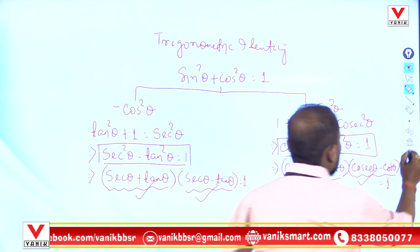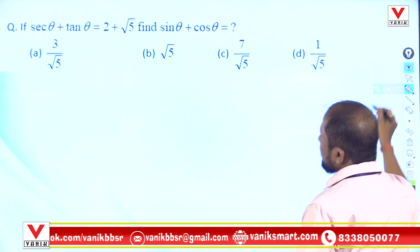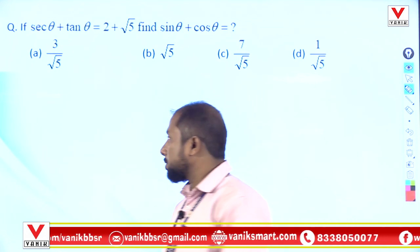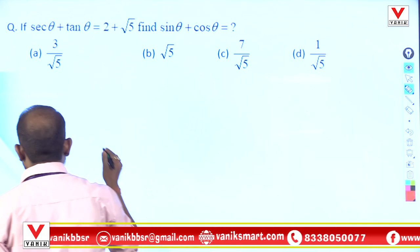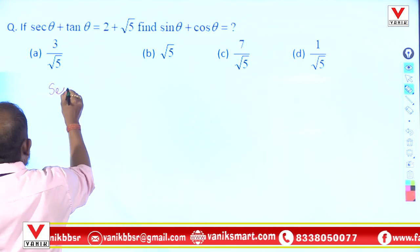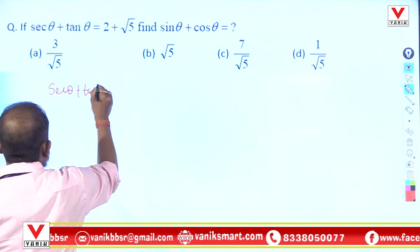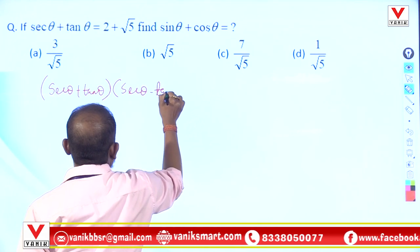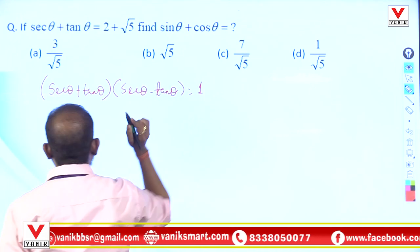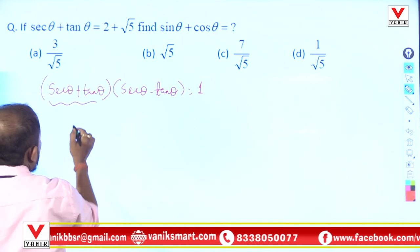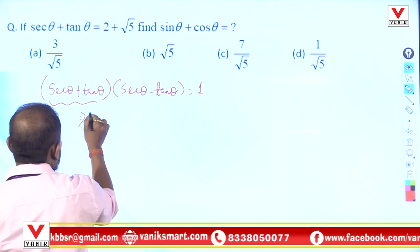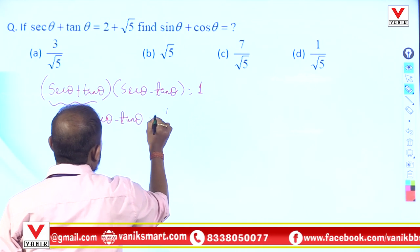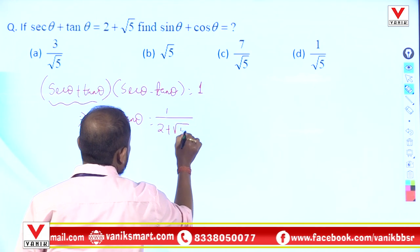Let us now look at a question. Given that sec θ + tan θ = 2 + √5, find sin θ + cos θ. We know that sec θ + tan θ multiplied by sec θ - tan θ equals 1, so sec θ - tan θ = 1 / (2 + √5).